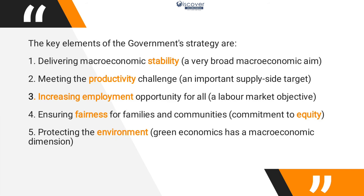How do we achieve a stable economy? If aggregate demand equals aggregate supply, we have stability. If exports equal imports, we have stability. If earnings and spending are equal, we have stability. A strong macroeconomic policy is important for this. The second objective is meeting the productivity challenges — a supply-side target where the government must ensure enough production to meet the needs of the people.